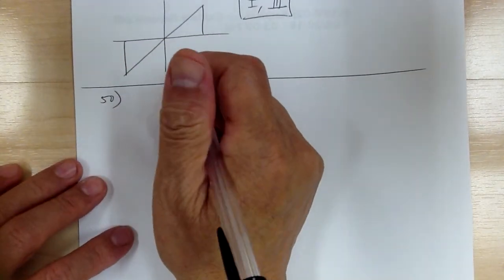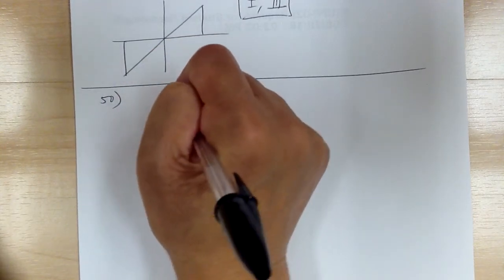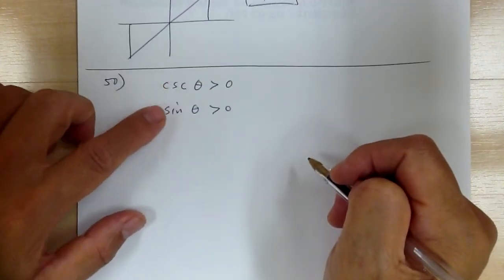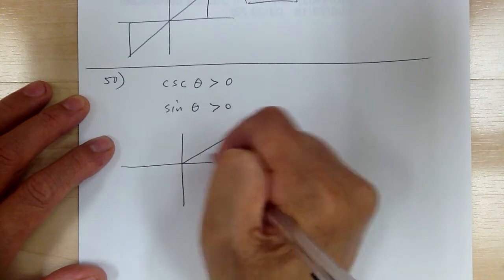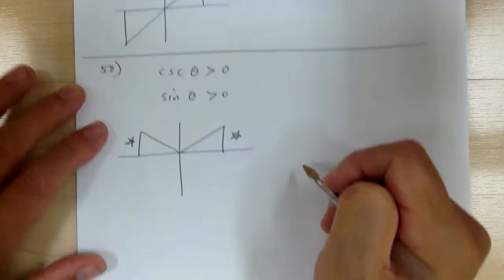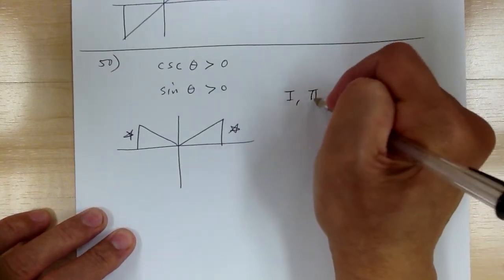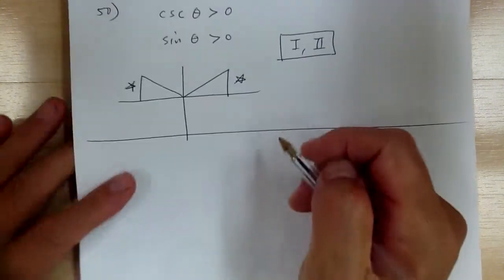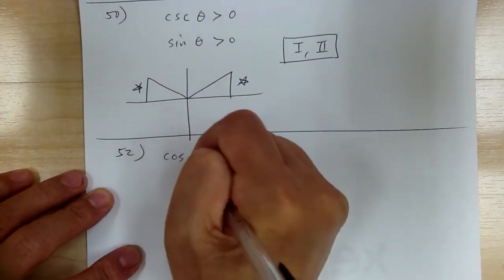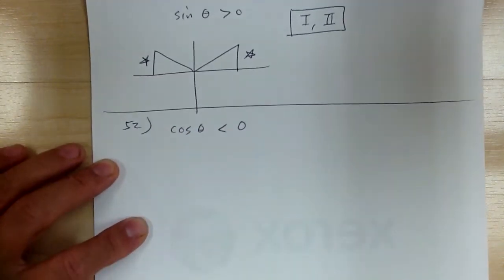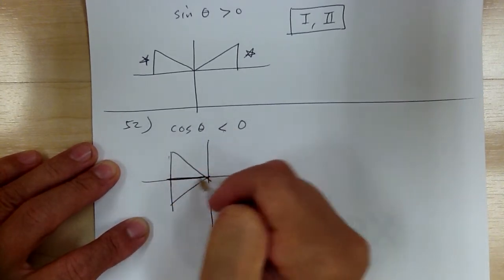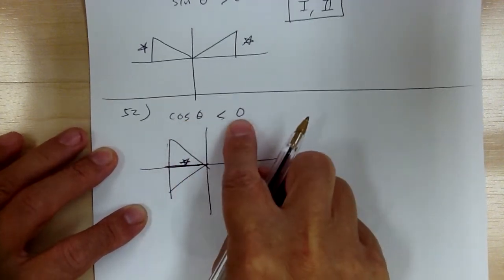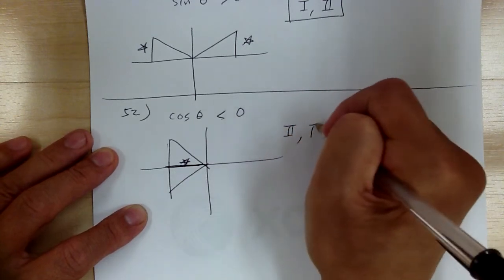Number 50: cosecant theta is greater than 0. Cosecant comes from sine, so if cosecant is greater than 0, then sine is greater than 0. Sine is the vertical, so it would be these two here — quadrant 1 and quadrant 2. Number 52: cosine theta is less than 0. Cosine is horizontal, so horizontal less than 0 means it's negative. You get triangles in quadrant 2 and quadrant 3.